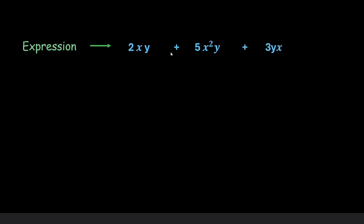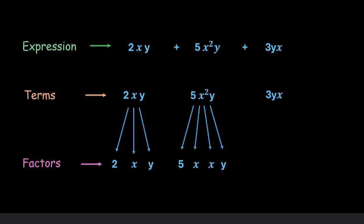We have an algebraic expression where these are the terms of the expression. If you look at these terms, we see that each of the terms have some factors. For example, the first term has three factors: 2, x and y. The second term has four factors: 5, x, x and y. Similarly, the third term has three factors: 3, y and x.